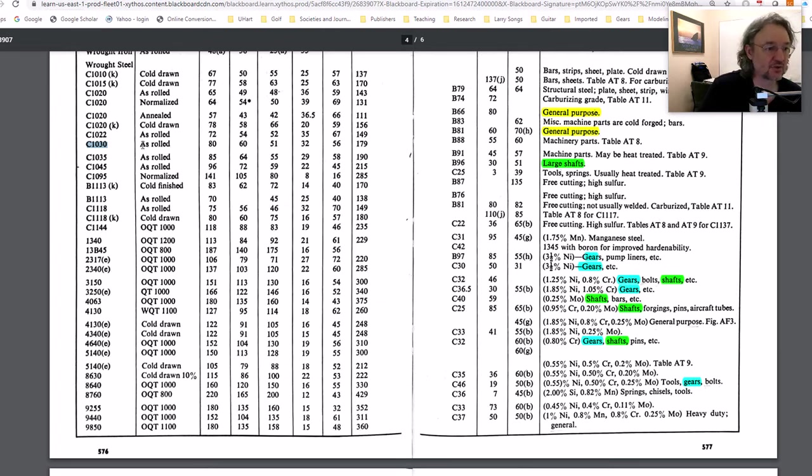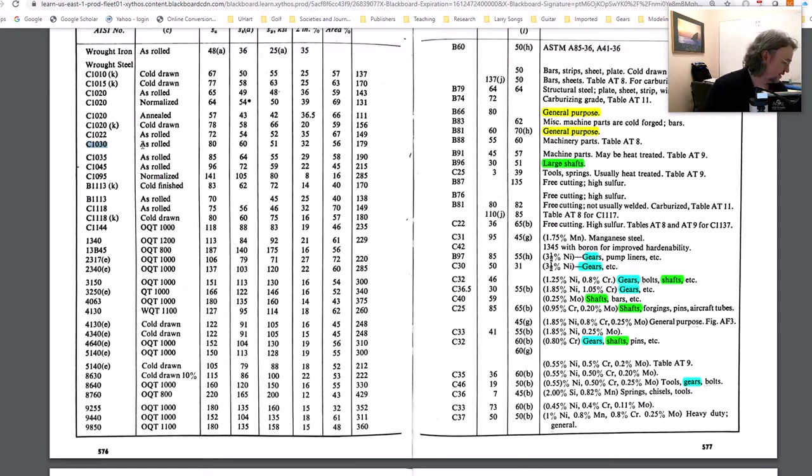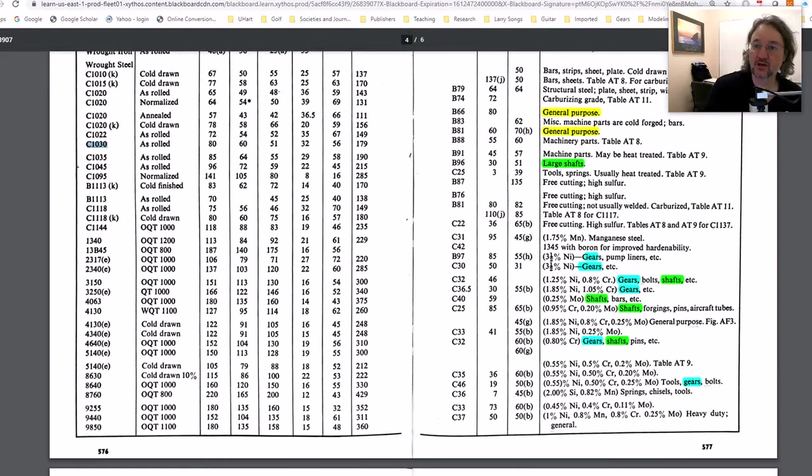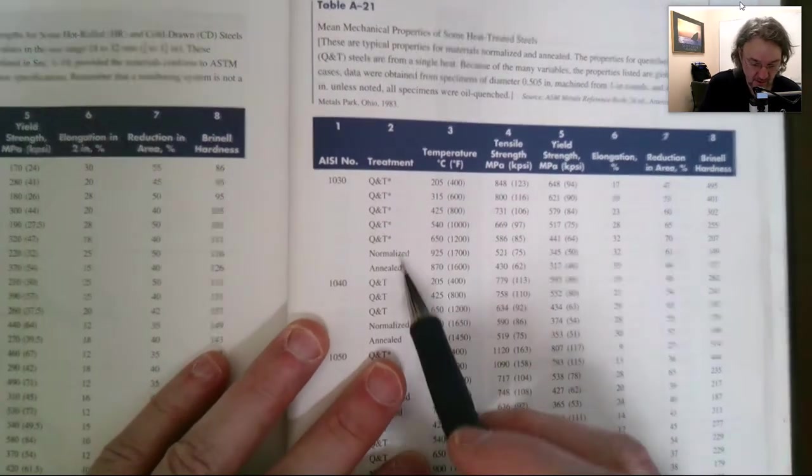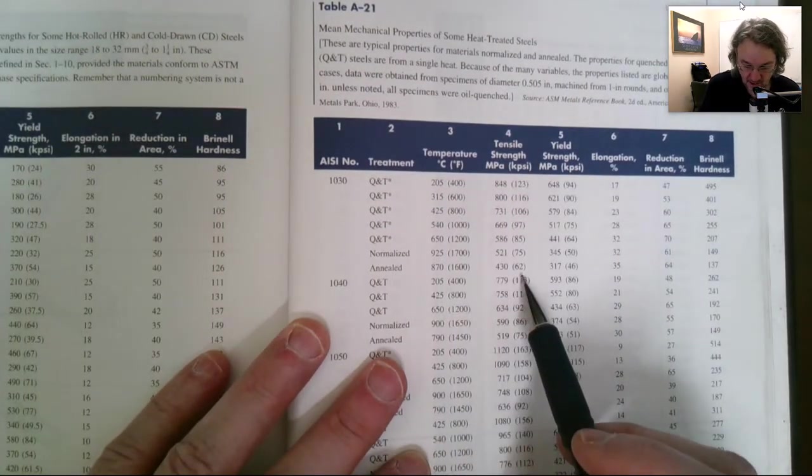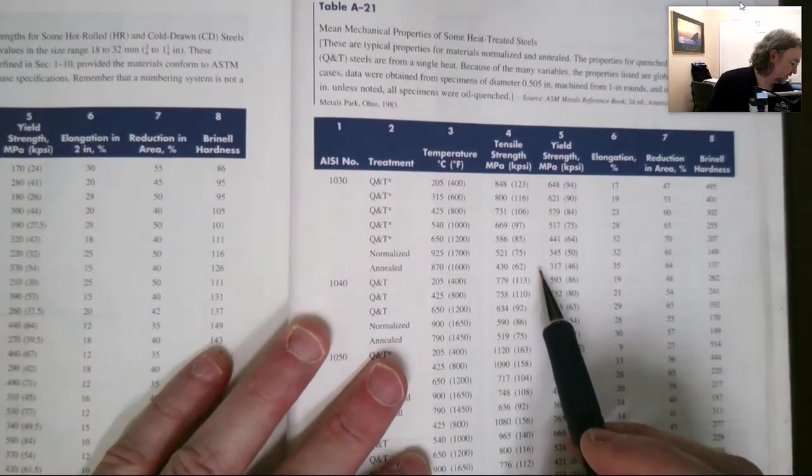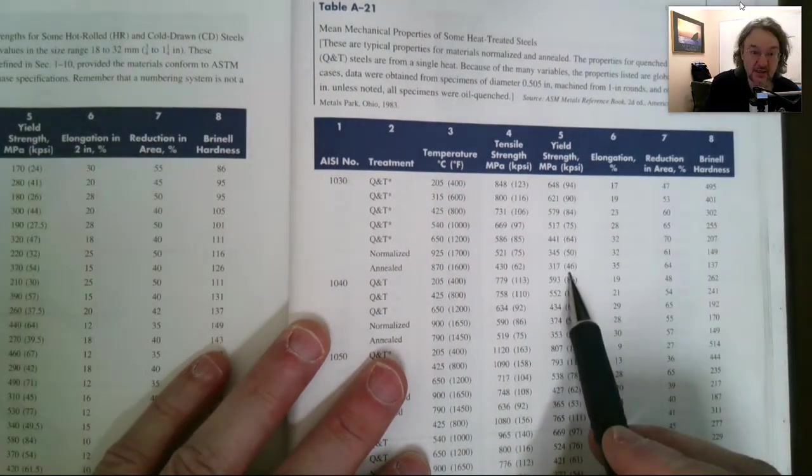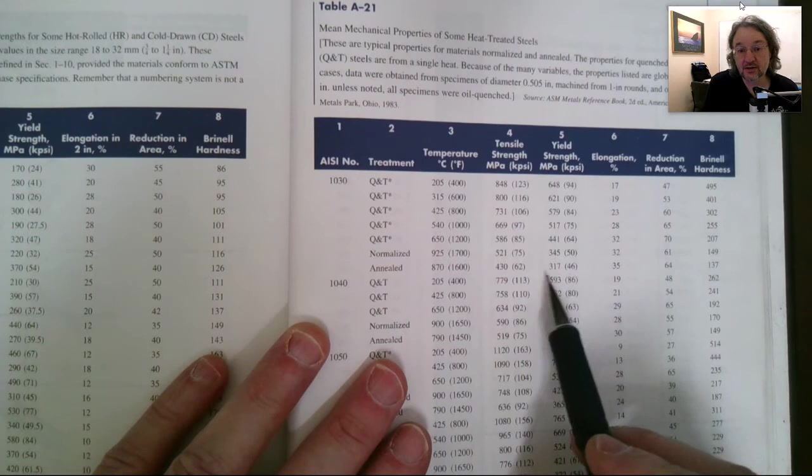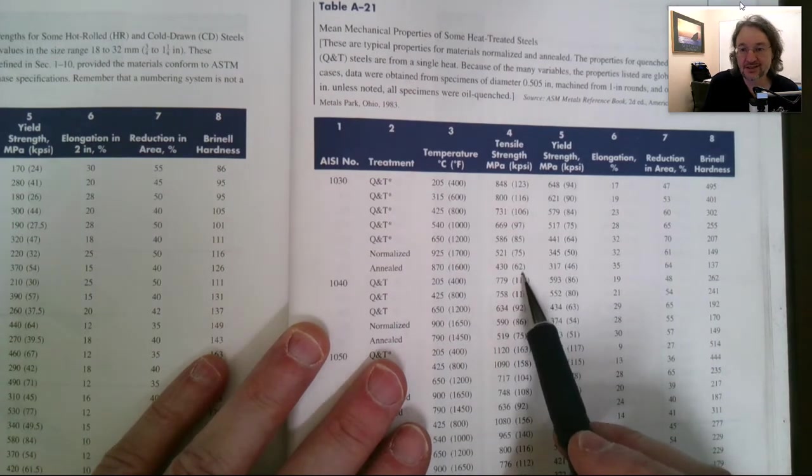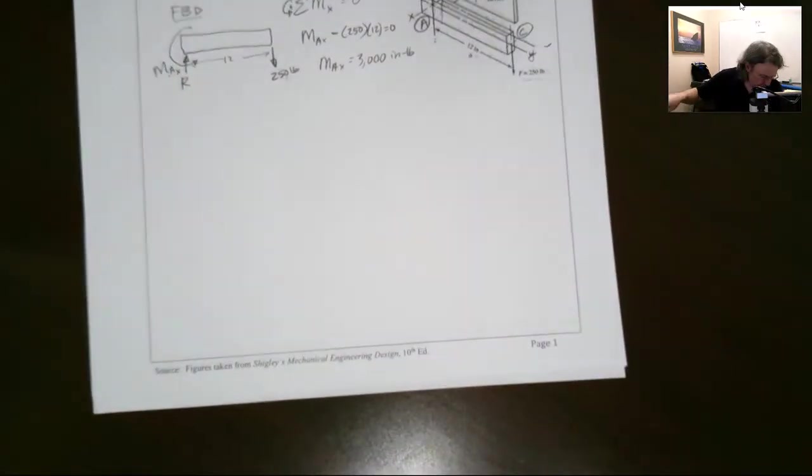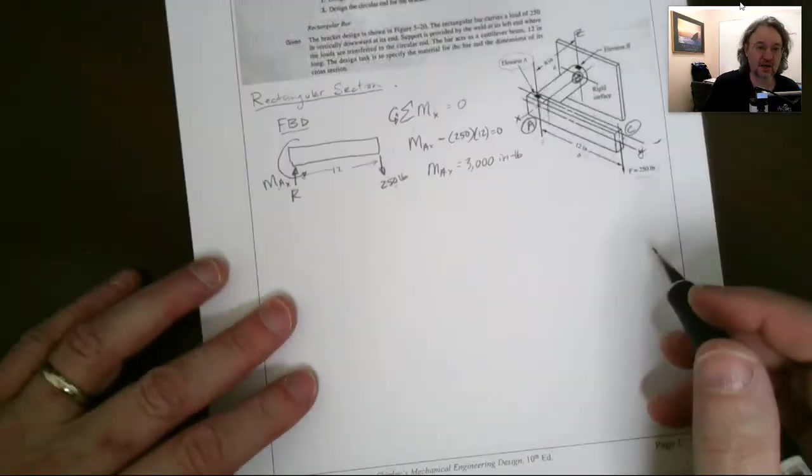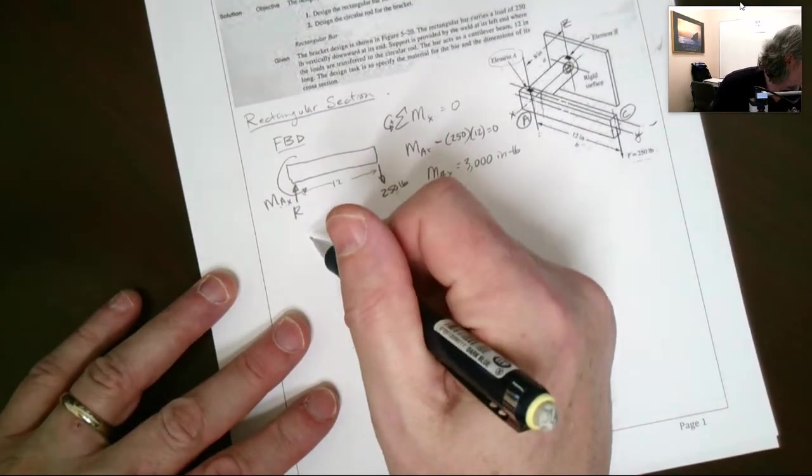Okay. And I didn't do as rolled. I went ahead and did annealed. I think 1030 annealed. Okay. So, out of the book right here, that would be 1030 annealed. And I had, let me double check, 46 KSI is the yield. And the ultimate is 62. We don't need the ultimate in this case, but if we were doing fatigue, we would. So, that was the choice that I made, the design choice that I made.